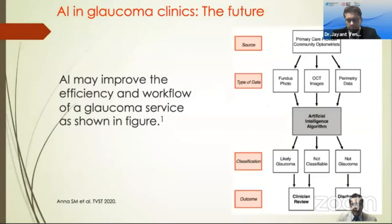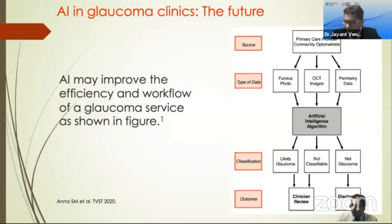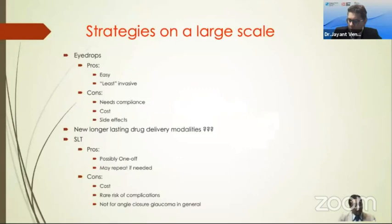AI may over time improve the workflow and efficiency in a glaucoma service. For example, the primary eye care provider could feed the deep learning system with fundus photos, OCT images, or perimetry data, and that system could classify the result as either likely glaucoma, not glaucoma, or not classifiable. Not glaucoma cases can be discharged, while likely glaucoma and not classifiable cases would be reviewed by the clinician.